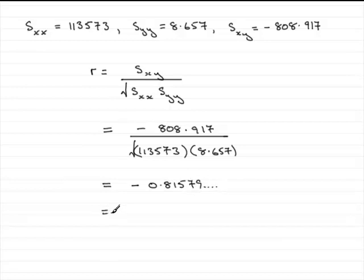And if you round that up to say three significant figures, it's going to be minus 0.816 to 3SF, three significant figures.